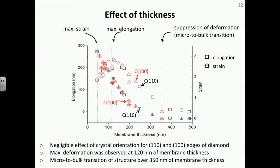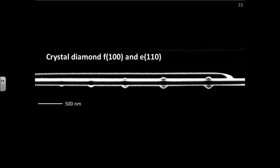From this graph we can find three important pieces of information. The maximum strain occurred at the minimum thickness of membrane. The maximum elongation happened at 120 nanometers of membrane thickness. And over 350 nanometers, we could see suppression of deformation, which we call the micro-to-bulk transition of nanostructure. If the structure has over 350 nanometer thickness, it behaves like a bulk structure, not a smaller microstructure. So until now, we studied how volume expansion happened, how long-range ion propagation occurs, and how these structures form by focused irradiation onto the diamond membrane.